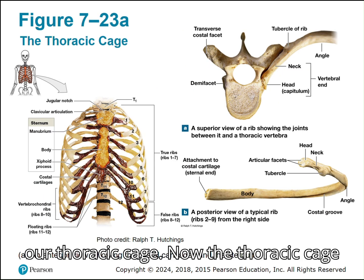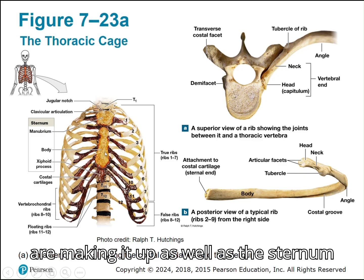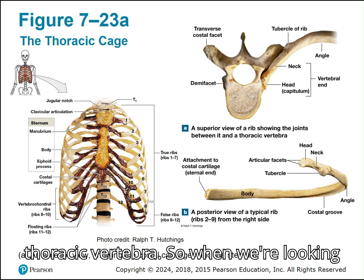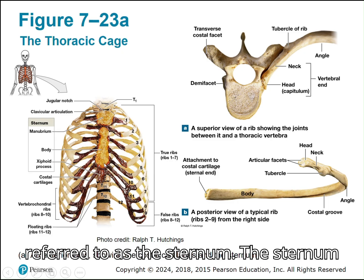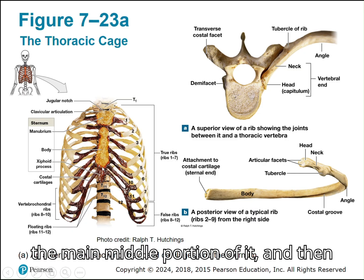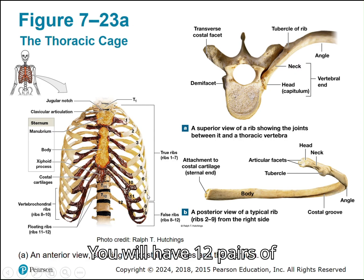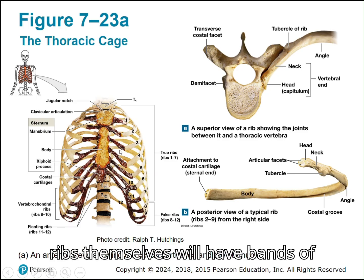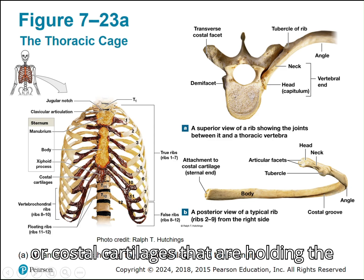The last part is the thoracic cage, which is made up of the ribs and the sternum, and the ribs attach to those transverse processes we saw on the thoracic vertebrae. The sternum — the breastbone — has three major parts: the manubrium at the top, which is a square piece; the body, the main middle portion; and the xiphoid process, the pointy section at the bottom. There are 12 pairs of ribs attached to the thoracic cage, and bands of cartilage called costal cartilages hold the ribs to the sternum.